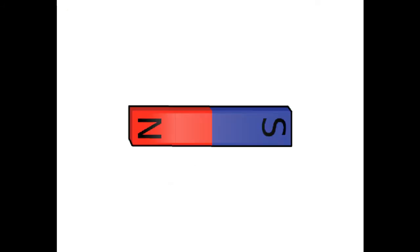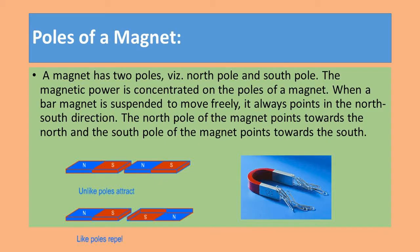When you see a magnet, you can see there is N written on one end and S written on the other end. These are the poles of the magnet. A magnet has two poles — one is the north pole and another is the south pole. The magnetic power is concentrated on the poles of the magnet, meaning the strength of the magnet is more at its poles.